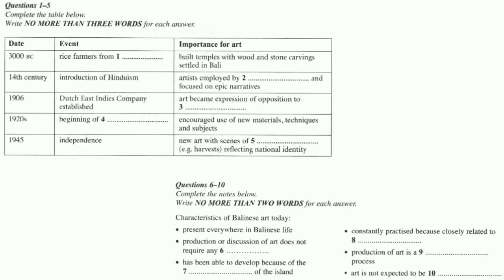Last week, we looked at the traditional art of Japan. In this week's lecture, we're going to move south and look at the very special way in which art has developed in the beautiful island of Bali, which is now part of Indonesia. I'll begin by giving you a brief historical overview. It's thought that the first inhabitants of Bali were farmers who arrived around 3000 BC, at the beginning of the Iron Age. They probably originally came from China, and in Bali, they cultivated rice and built temples ornamented with wood and stone carvings and statues.